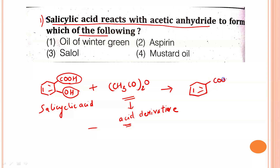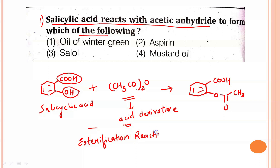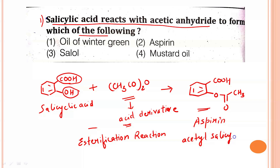We know that when phenol and an acid react, it forms an ester. The acid group will remain as such and the ester will form from the phenol group. This is why this reaction is known as an esterification reaction. The obtained product is aspirin, also known as acetylsalicylic acid.